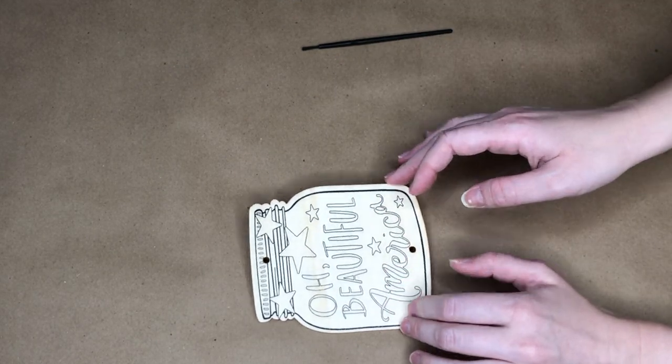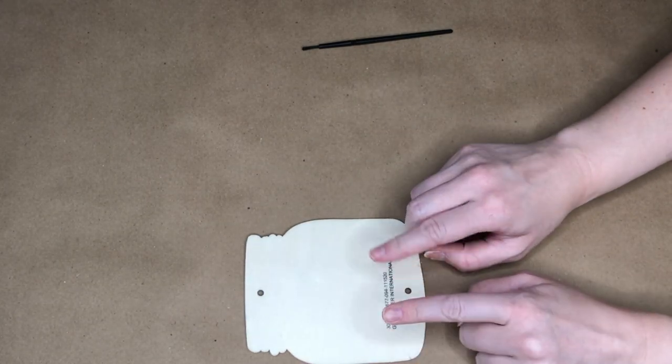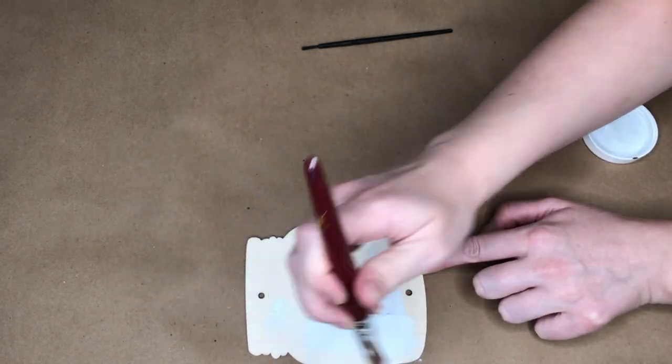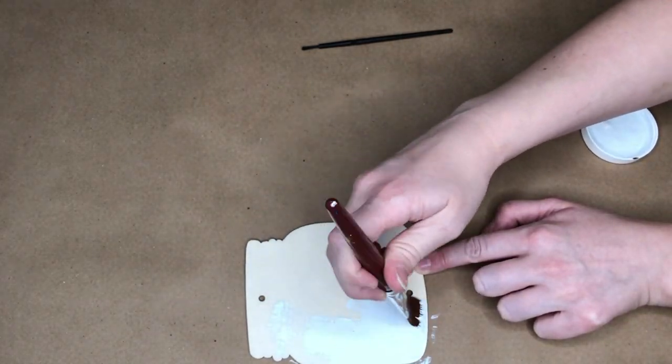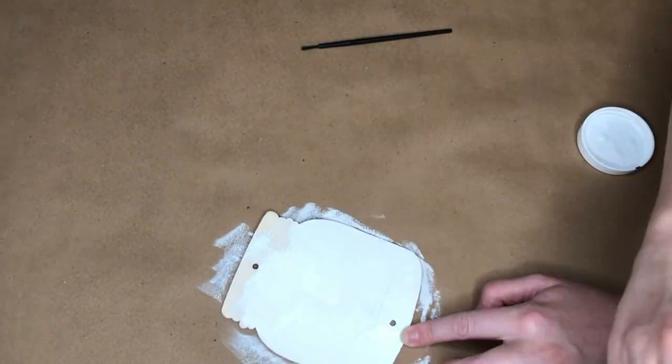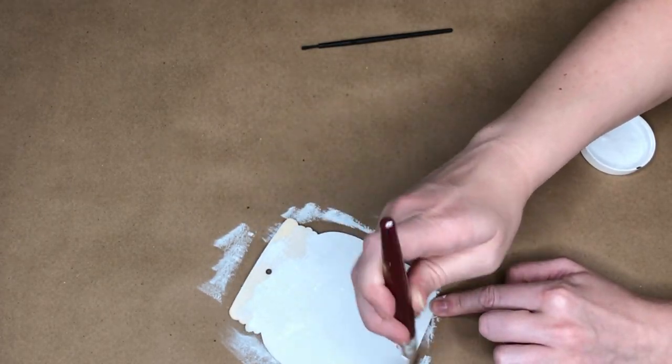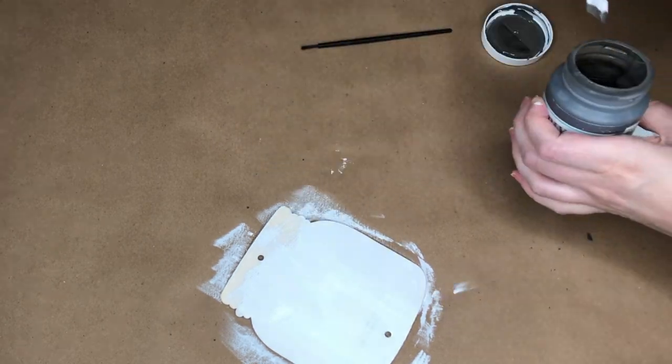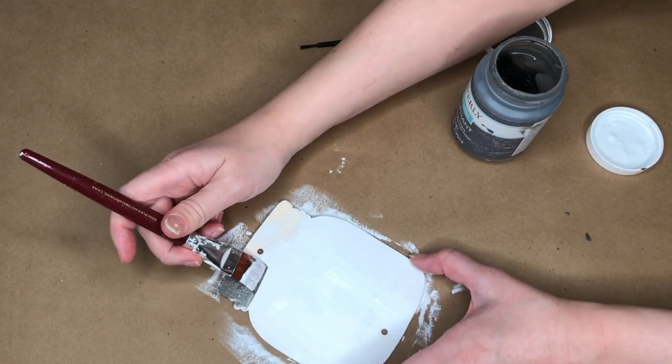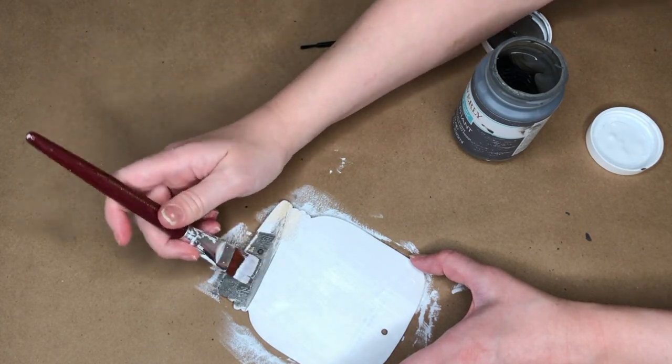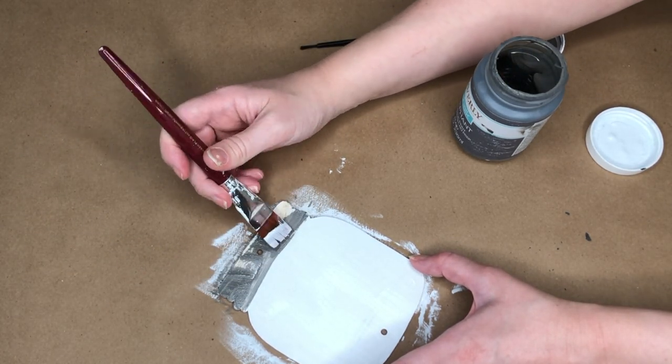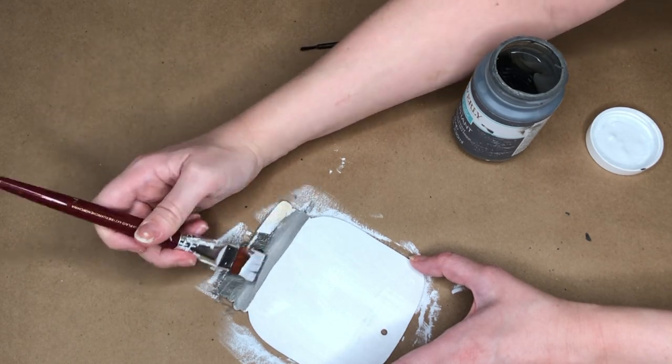So I bought this America the Beautiful mason jar. I think it's supposed to be a wind chime at the Dollar Tree during the 4th of July season and all that I did was flip it over and there was some printed writing that would have shown through if I painted the yellow directly over it. So I just took some white paint basically to prime it and then for the lid of my mason jar I wanted it to look metal so I'm taking the shade Elephant by Waverly and just freehand painting the top of our mason jar.